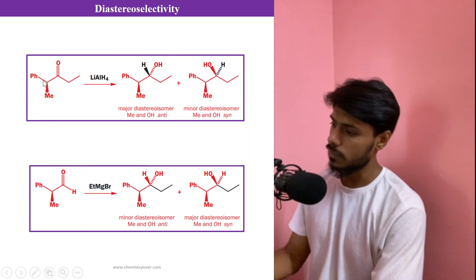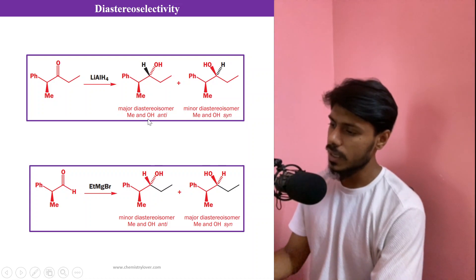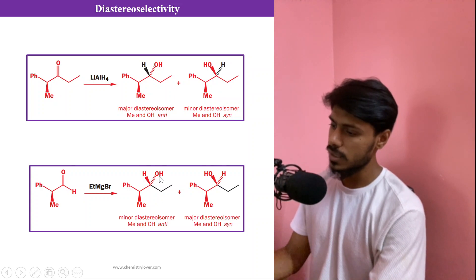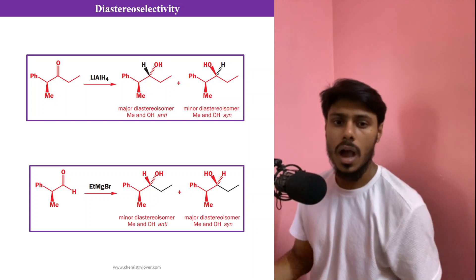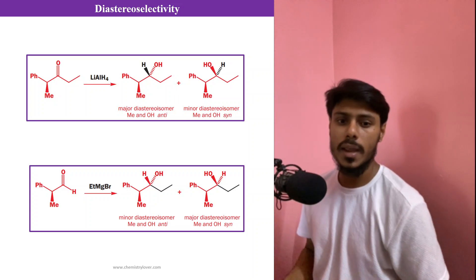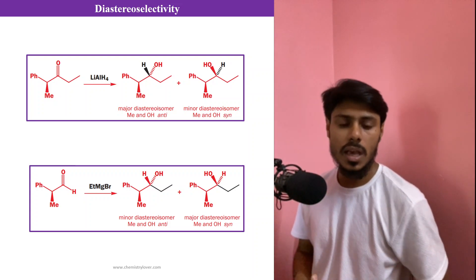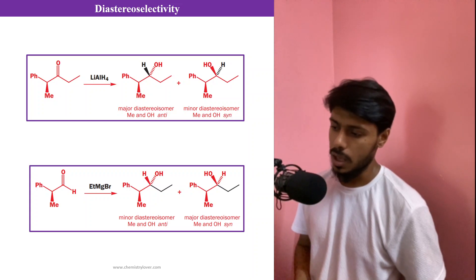We have two compounds: in the first case, lithium aluminum hydride is reducing a keto compound, and in the second case, a Grignard reagent is adding to an aldehyde carbonyl group. In both cases we are getting two products — one major and one minor. How do we predict which will be the major product? We can do it by using the Felkin-Anh model, which we will discuss.